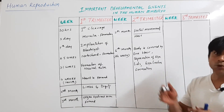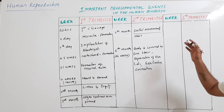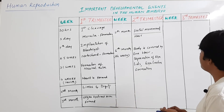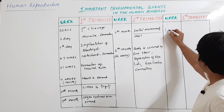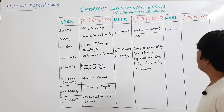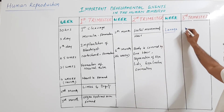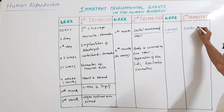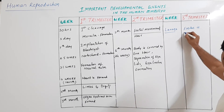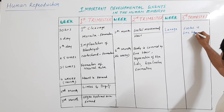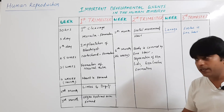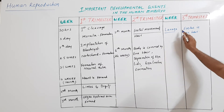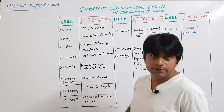In the third trimester, complete growth and development of the fetus takes place. In the ninth month, formation of lanugo occurs — the fetus is enclosed by a fine hair covering over the entire body, which is shed initially. This fine hairy covering over the fetus is called lanugo.